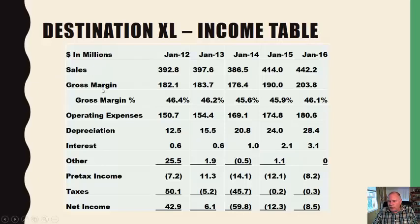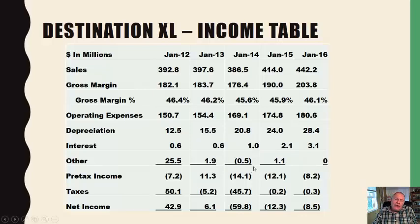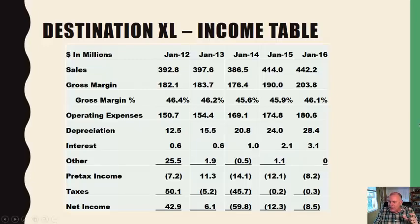We have sales, gross margin in dollars and as a percent — looking at the percentage of gross margin becomes very important. We also have operating expenses, depreciation, interest, other, pre-tax income, taxes, and net income. Sometimes you're going to see very unusual things in here, and that's where we'll go through next and talk about what makes up the components. The biggest thing — it all starts with this line right here: sales.